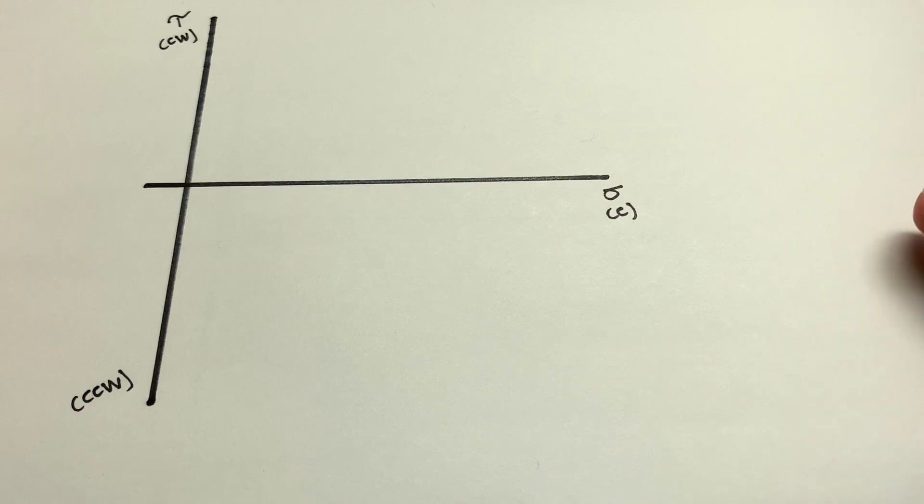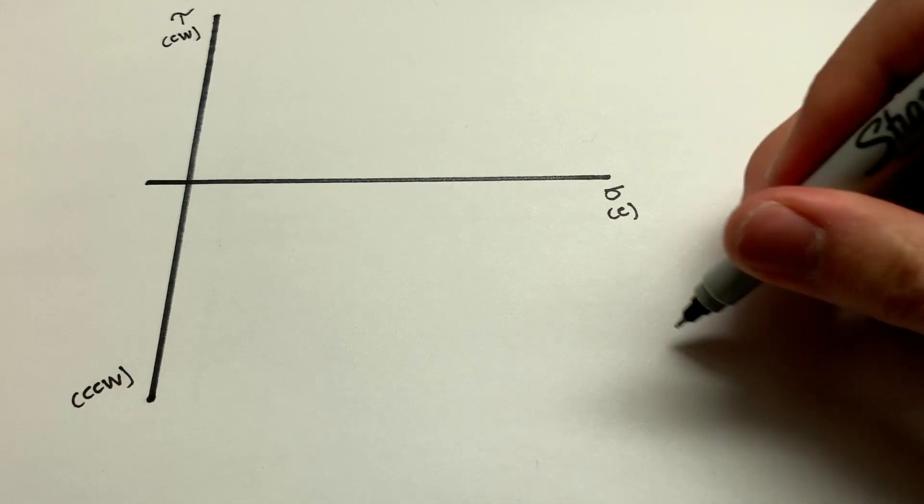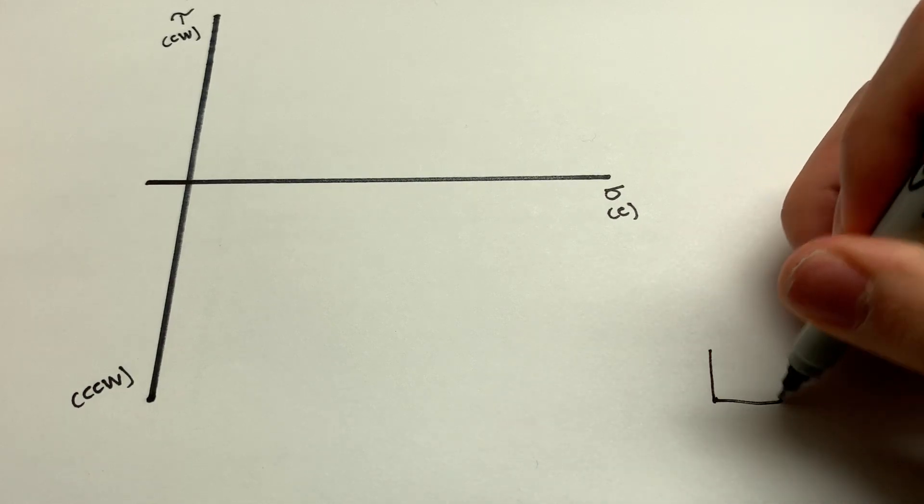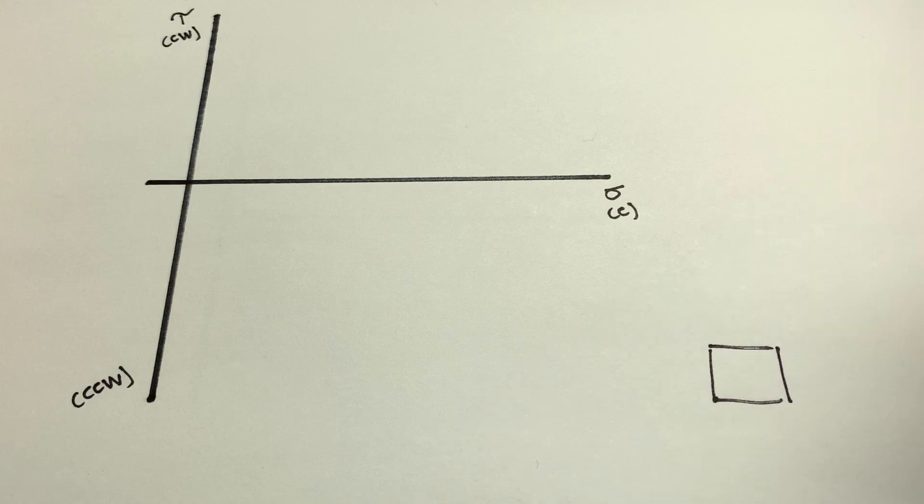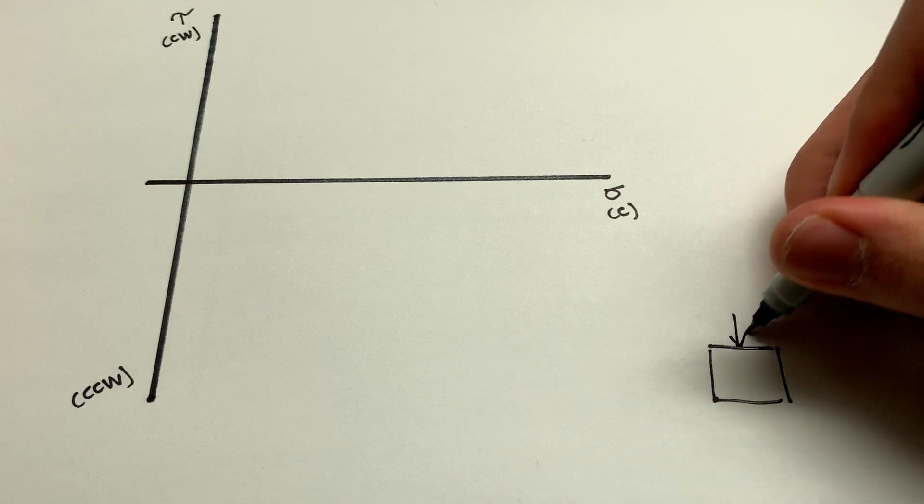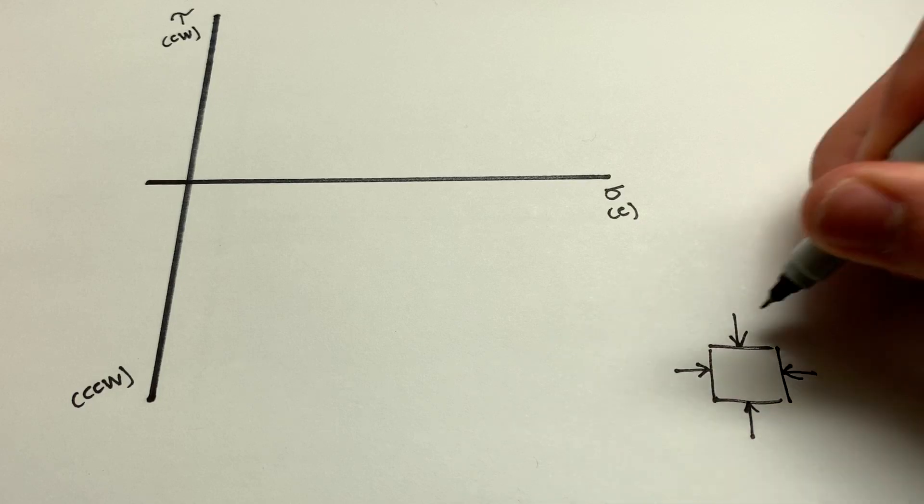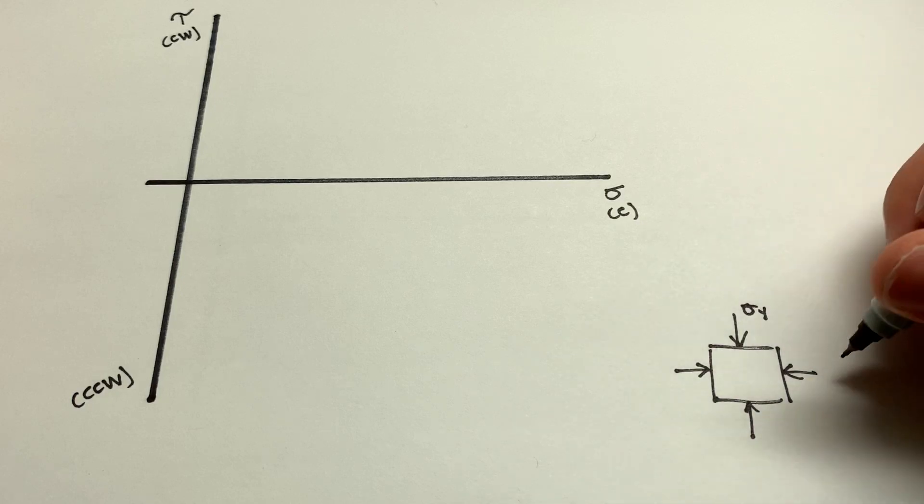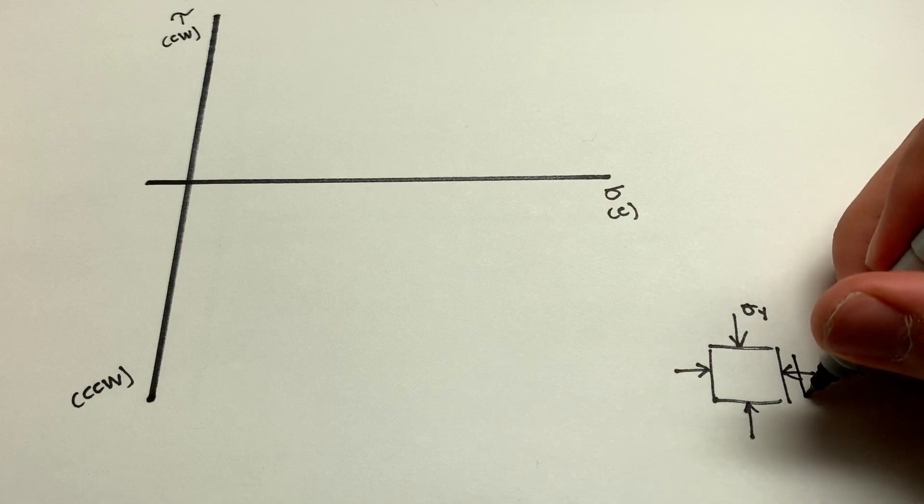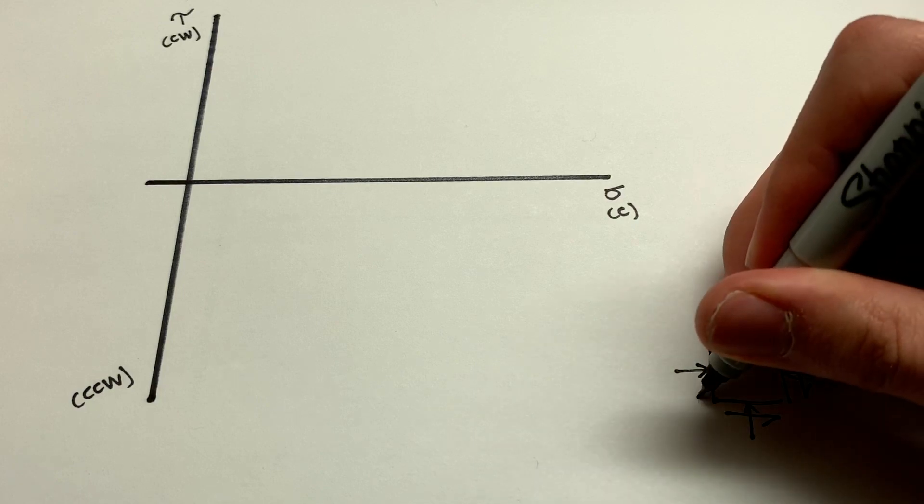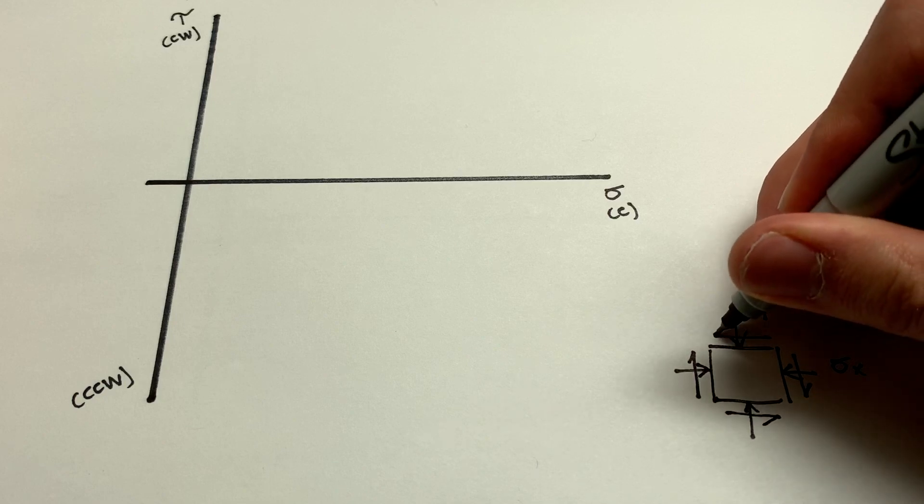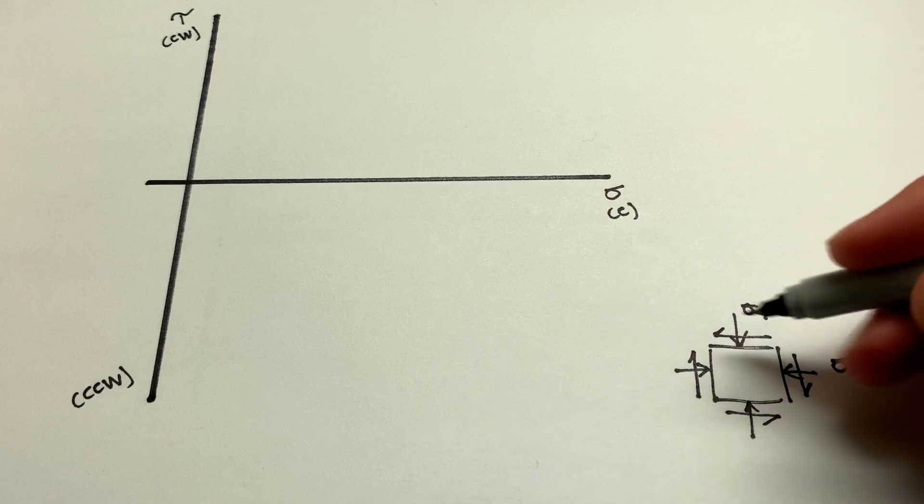So just to sort of motivate us, let's say we have a stress element down here. And of course, then we'll have our normal stresses acting on each face. This is acting in the y direction, it's sigma y. This is acting in the x direction, it's sigma x.